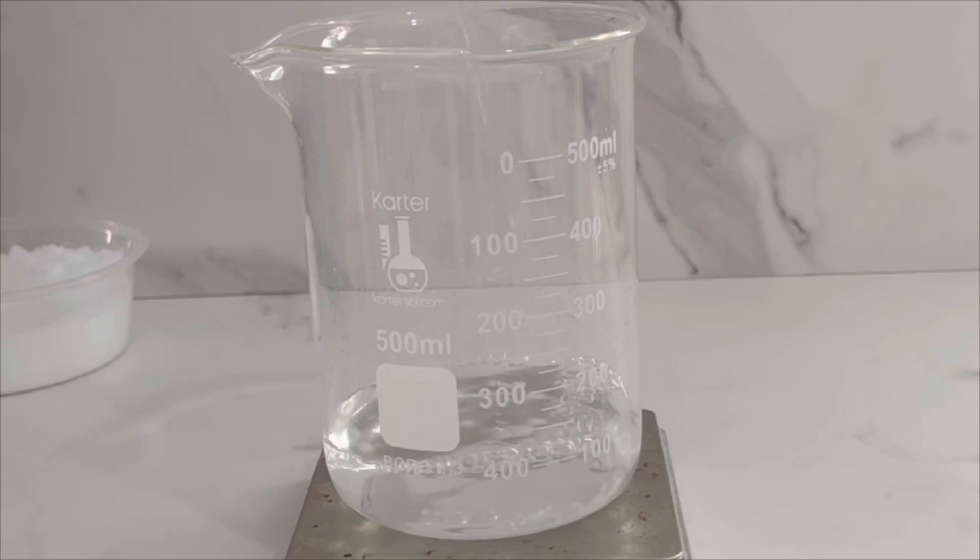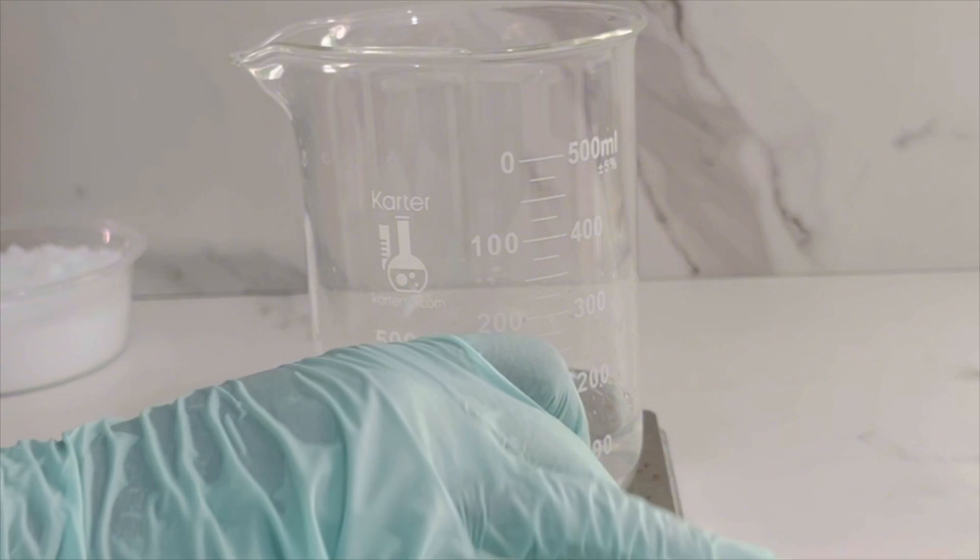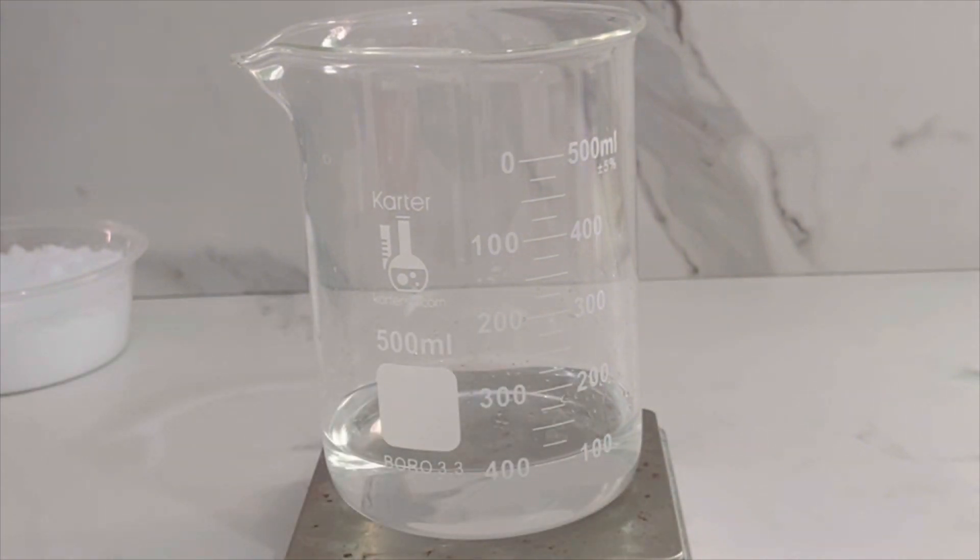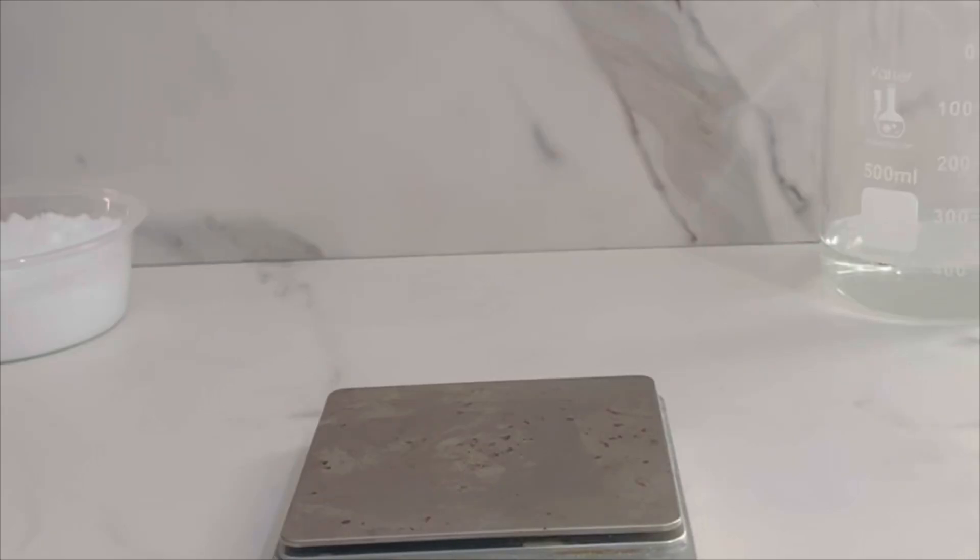In my previous video, I showed you how to make a 50% citric acid solution. That one lowers the pH; this one increases it, so it's totally different. If you need to watch that video, the link is in to this video, you can take a look.